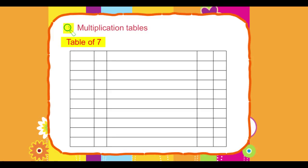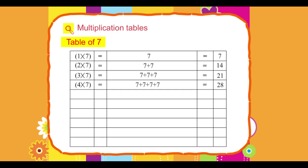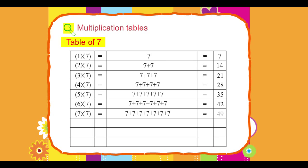Table of 7. 1 into 7 equals 7, 2 into 7 equals 14, 3 into 7 equals 21, 4 into 7 equals 28, 5 into 7 equals 35, 6 into 7 equals 42, 7 into 7 equals 49, 8 into 7 equals 56.